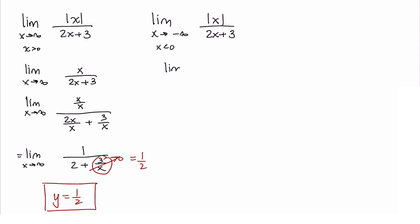So this is the limit as x approaches negative infinity of negative x over 2x plus 3. We go through the same motions here. The limit as x approaches negative infinity, dividing everything by x again: negative x over x, over 2x over x plus 3 over x.